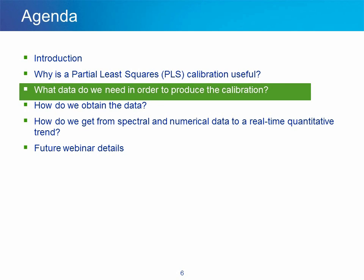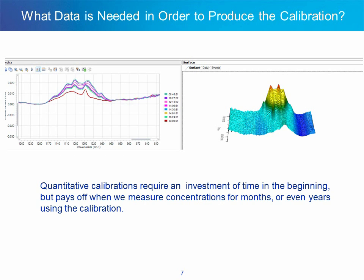What data do we need in order to produce the calibration? Quantitative calibrations require an investment of time in the beginning, but pay off when we measure concentrations for months or even years using the calibration. For the present case, the calibration standards were only used to predict concentration on the fermentation run from which they were taken. In an actual implementation, a model built from calibration standards taken from one or more separate fermentations would be used to predict the concentration for subsequent fermentations.